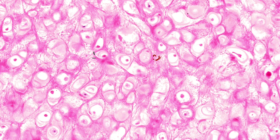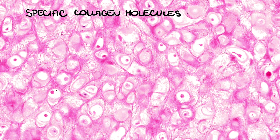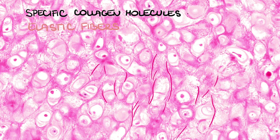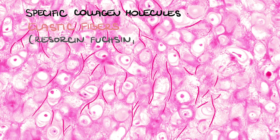The matrix contains cartilage-specific collagen molecules that can be found in all types of cartilages, as well as a dense network of elastic fibers and interconnecting layers of elastic material, which can be demonstrated with special stainings such as resorcin-fuchsin or orcein. This slide is stained with hematoxylin-eosin, therefore elastic fibers appear bright with light eosinophilia.